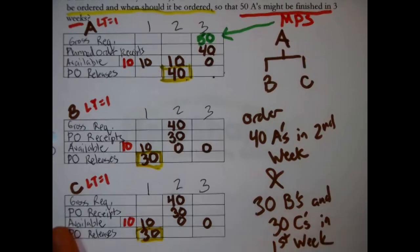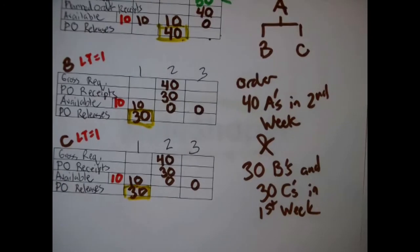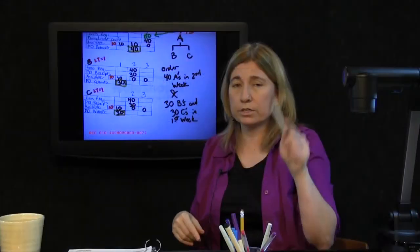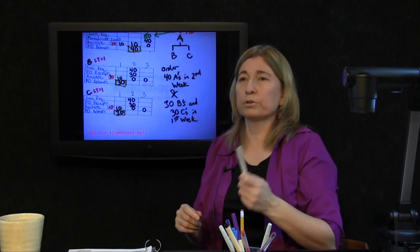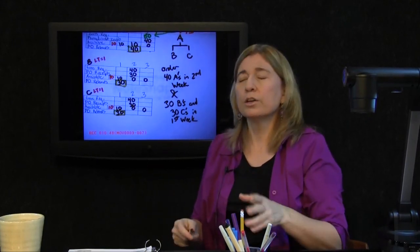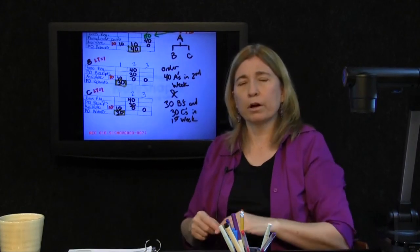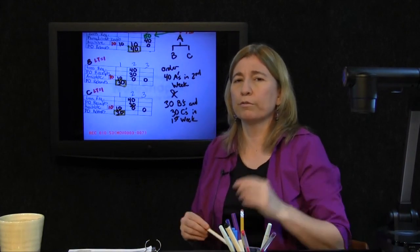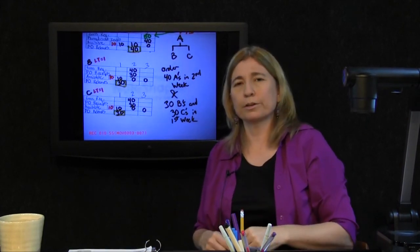I did nothing more than simply write out what we already knew and you can see that I had boxed in in yellow. That is how much to order and when should we order of all of these items such that we'll have fifty ready to go of finished good A in the third week. Thank you.